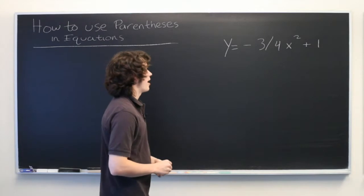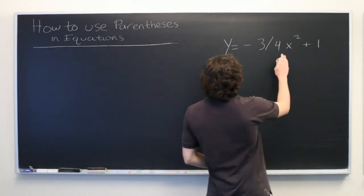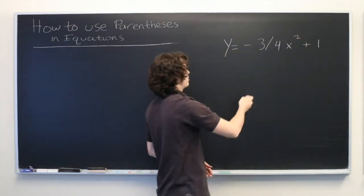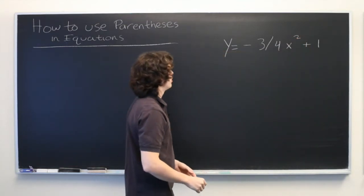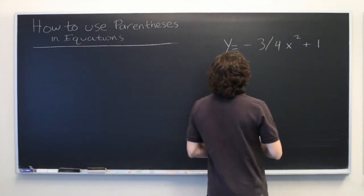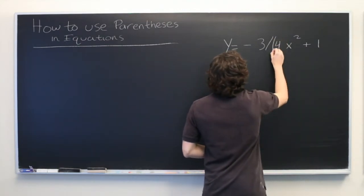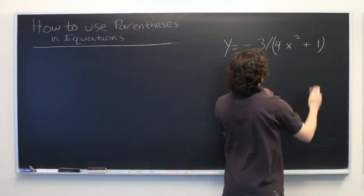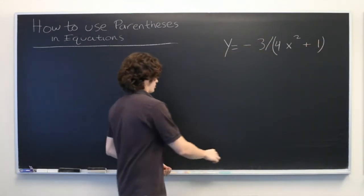Let's say that what we want to have happen is we square x, multiply it by 4, add 1 to it, and all of that is the denominator under negative 3. Well, we could write that as negative 3 over parentheses 4 x squared plus 1. One possibility.